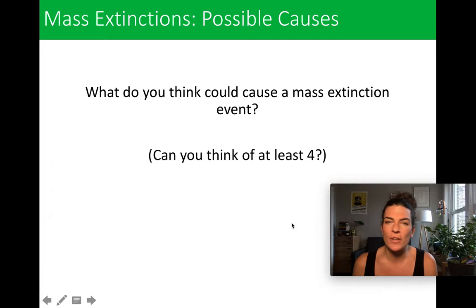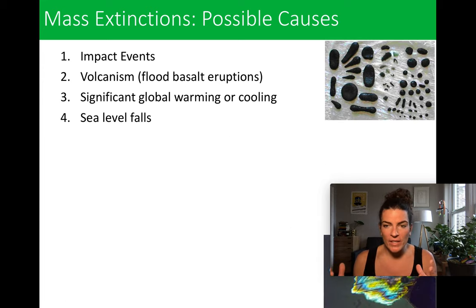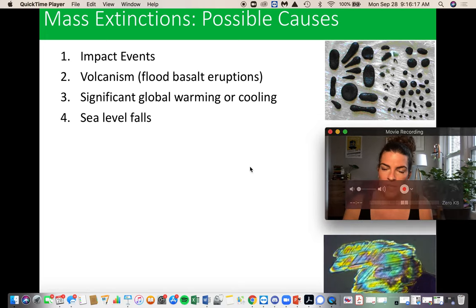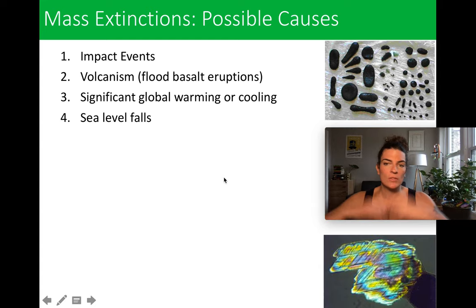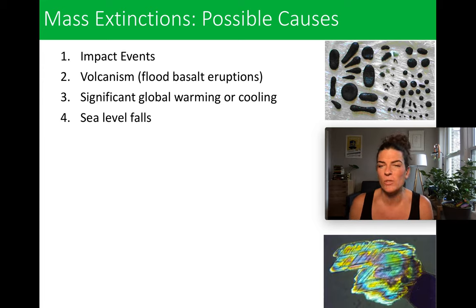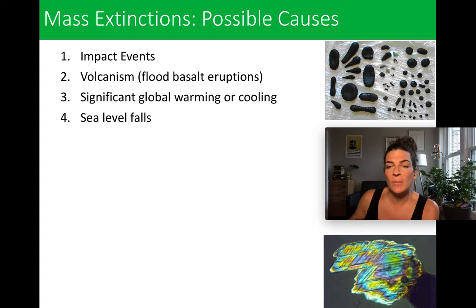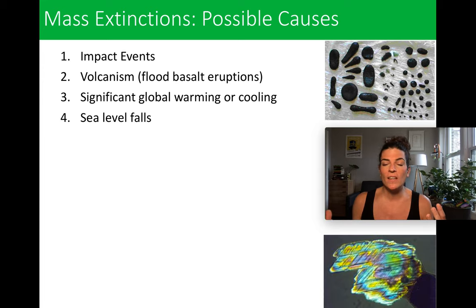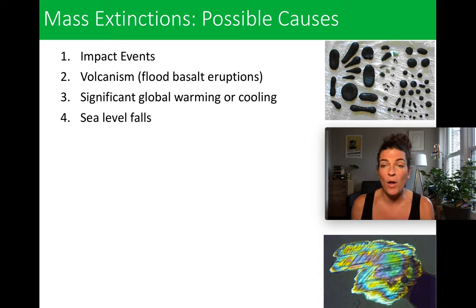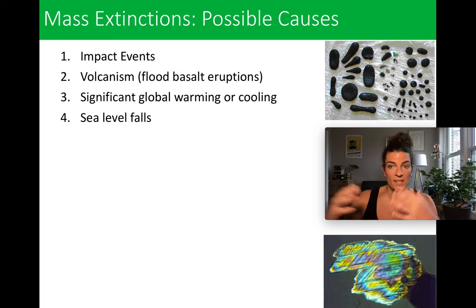There are kind of four things that cause a mass extinction event: impact events — an asteroid hitting the Earth; volcanism — increased volcanic activity changing the environment, the sunlight reaching the surface, which affects which plants can grow and how warm it is; significant global warming or cooling, as we are experiencing now; and changes to sea level — specifically falling sea level, which affects species living in coastal areas. When the sea level drops, they have nowhere to go.